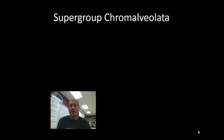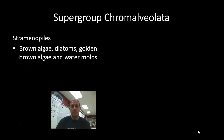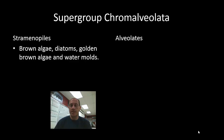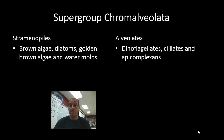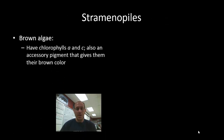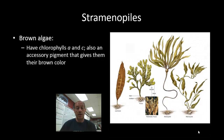The first group, the Chromalveolata, actually has two distinct subgroups: the straminopiles, which consist of the brown algae, diatoms, golden brown algae, and water molds. These organisms are distinctly different yet related to the alveolates group, which includes the dinoflagellates, ciliates, and apicomplexians. The brown algae found in the straminopiles is what we would commonly refer to as kelp.